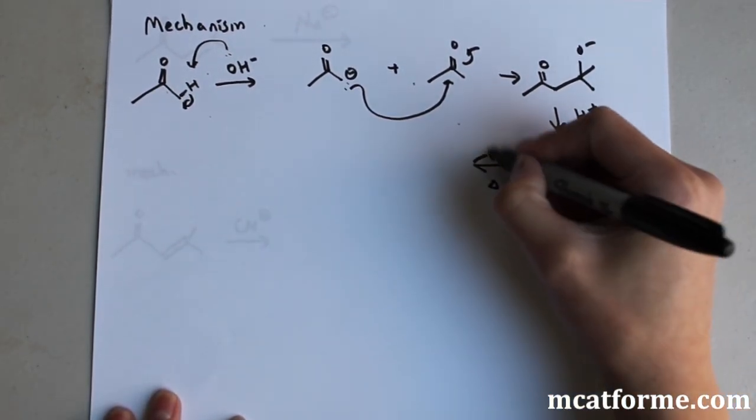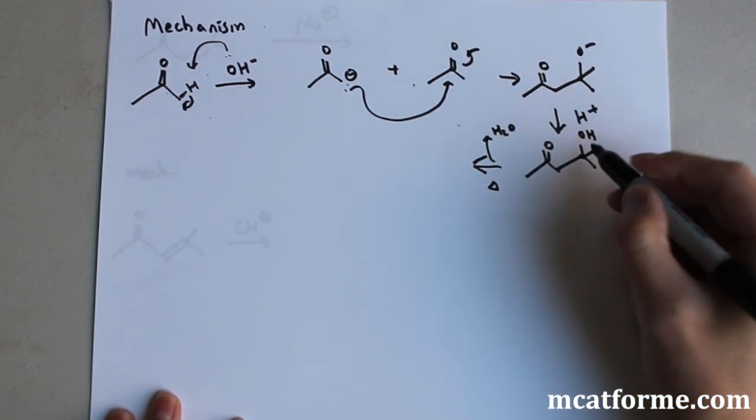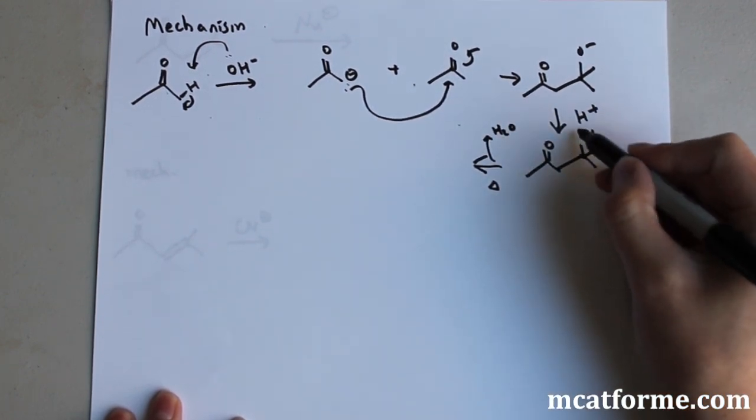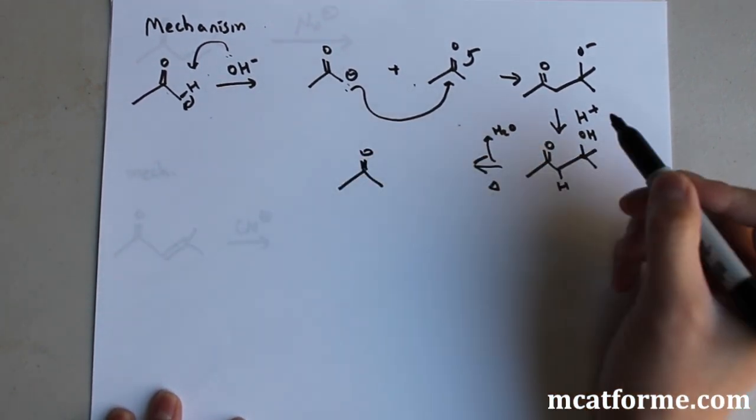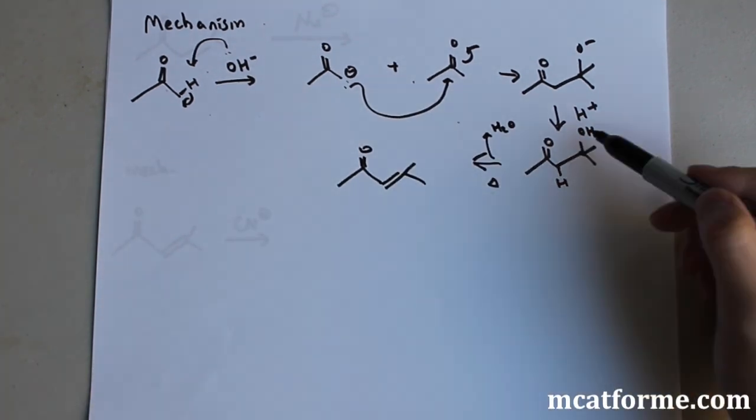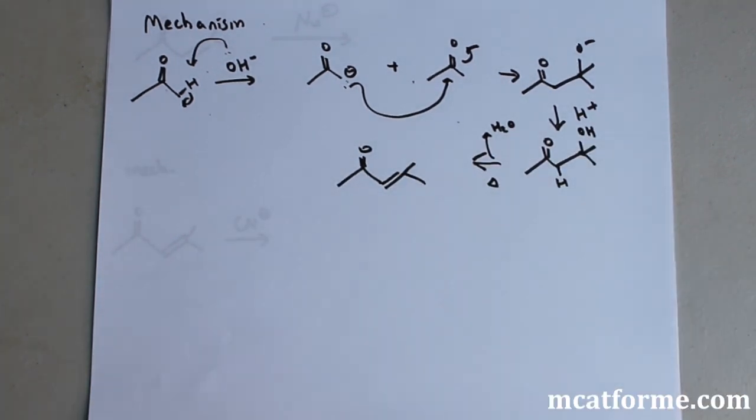So now when we add heat, what's going to happen is we're going to lose water. And we're going to lose the water from this OH right here and one of these hydrogens. And we'll see that the final product will look like that. All we did was remove that OH and this H in a dehydration reaction.